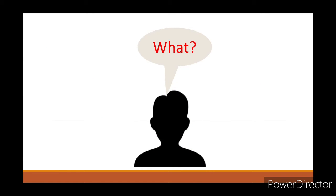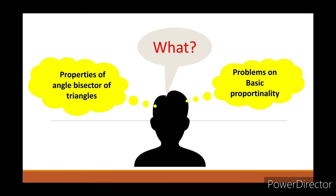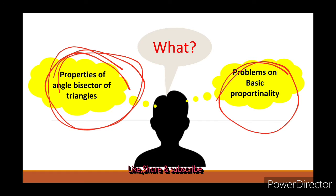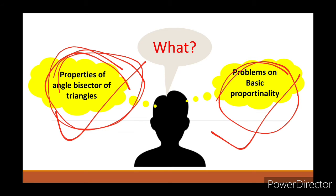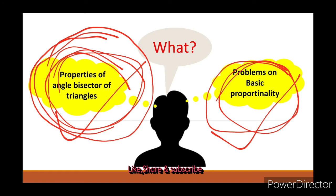Now today we are continuing our chapter. Today's topic is properties of angle bisector — properties of the angle bisector of triangles — and problems on these, as well as problems on the basic proportionality theorem. We are covering one problem on properties of angle bisector and one problem on the basic proportionality theorem in today's session.